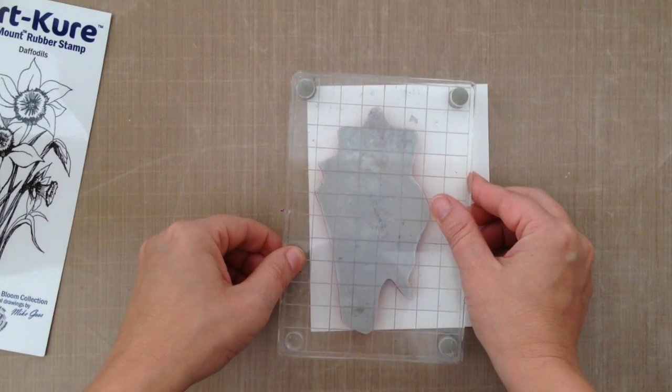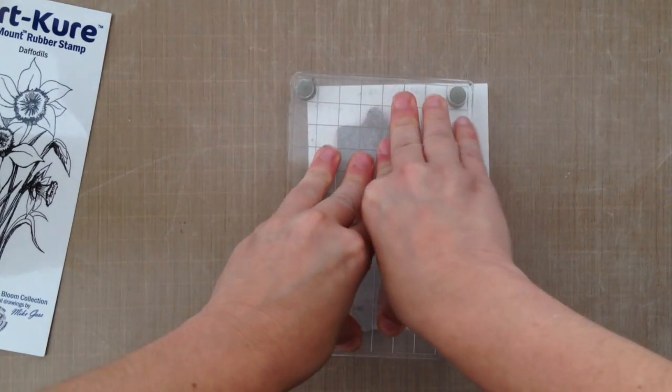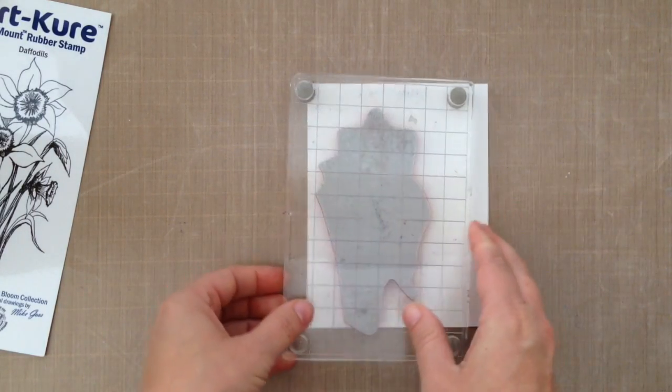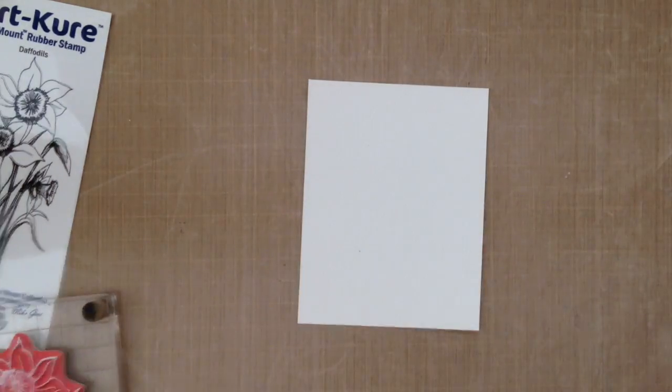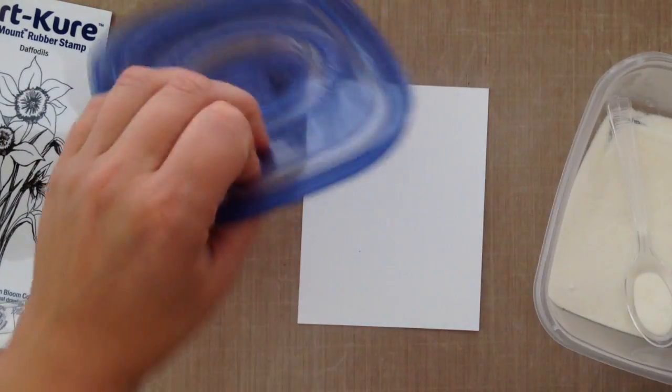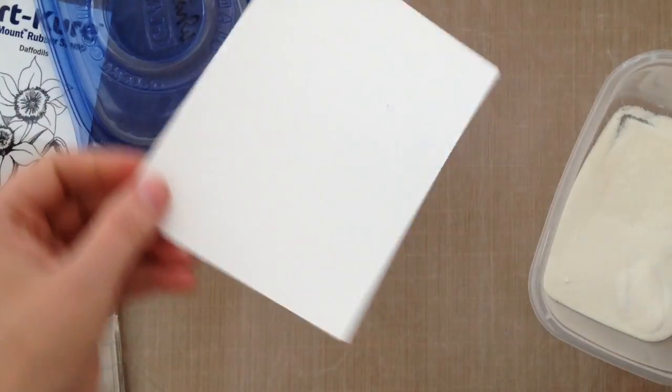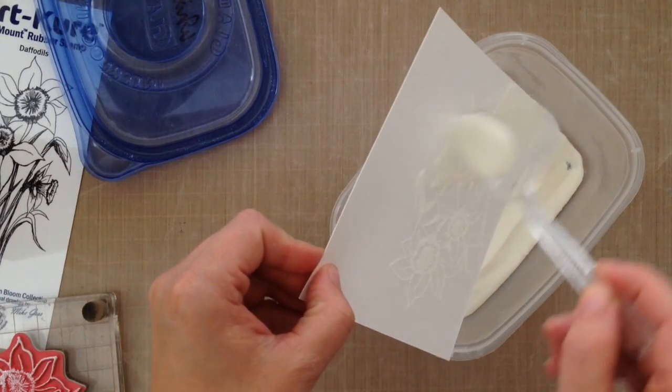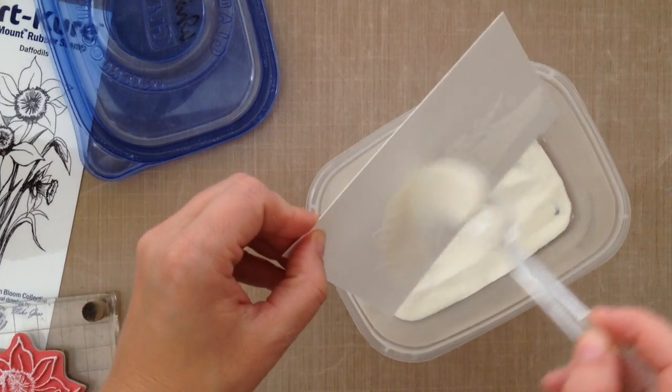And I usually always heat set my images when I watercolor for two reasons. One, because it keeps the outline of the images very sharp and crisp. And sometimes if you watercolor over an ink, even though it's waterproof, it does dull down the color a little bit, in my opinion. And the other reason I do it is because it almost gives you like a little barrier, a little wall barrier when you're watercoloring.